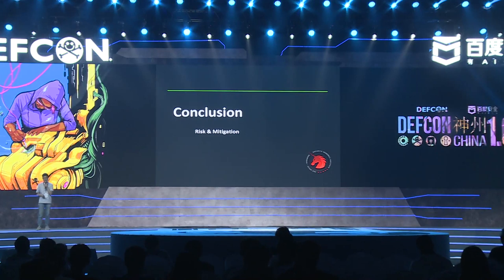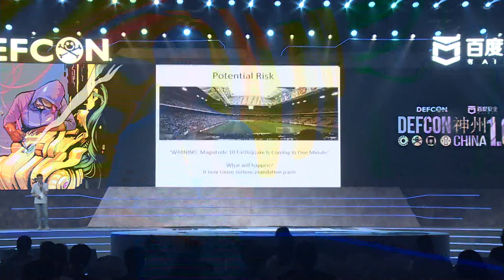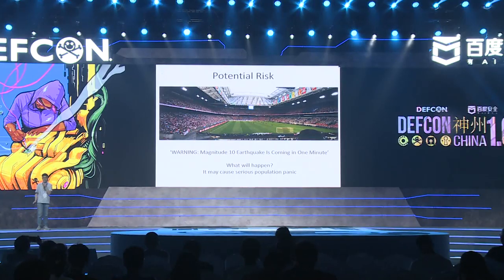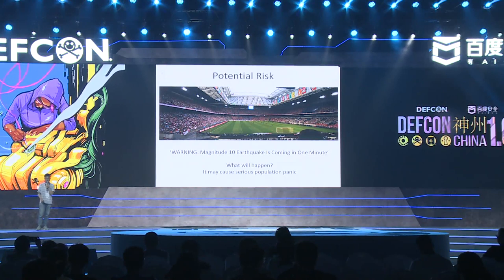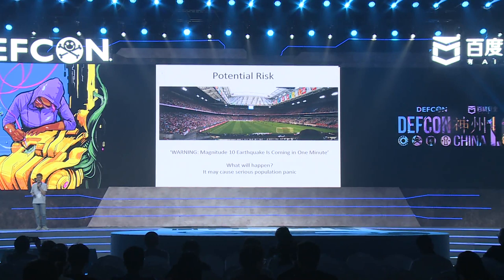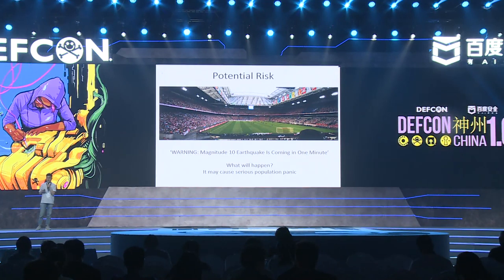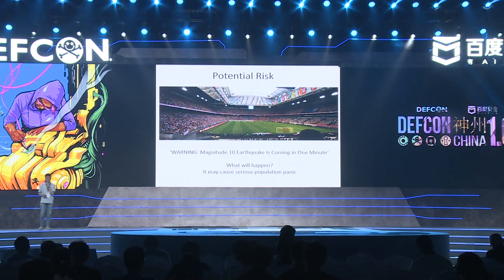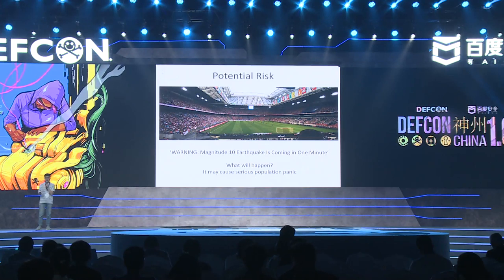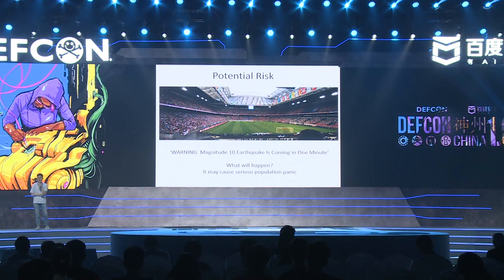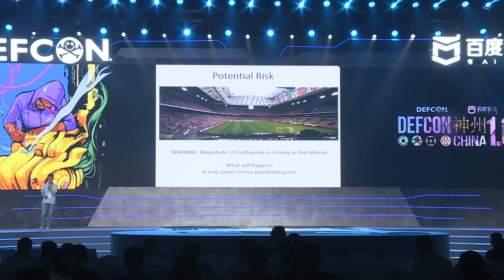Here is the conclusion. I will talk about the risk and mitigation. Imagine a crowded stadium with many people. If we set up a fake base station and send a fake warning message saying 'Warning: magnitude 10 earthquake is coming in one minute,' what will happen? Because the warning message is a broadcast message, it can be received by all mobile phone users simultaneously. All phones that support PWS will make a harsh alarm with an earthquake reminder, which may cause huge panic and even a stampede as people try to escape from their seats.